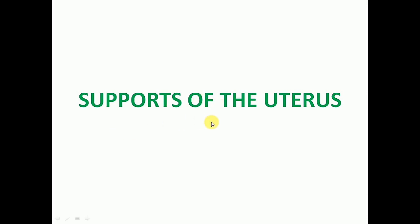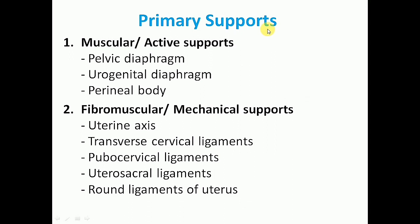The presentation illustrates the main supports of the uterus. The uterus is a mobile organ which undergoes extensive changes in size and shape during the reproductive period of life. It is supported and prevented from sagging down by a number of factors which are mainly muscular and fibromuscular.